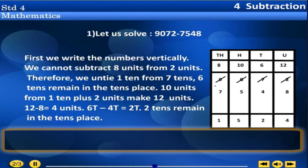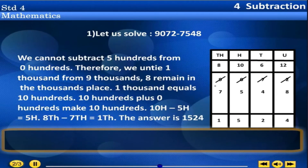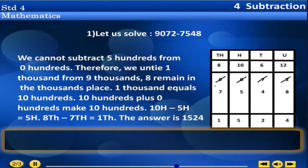6000 minus 4000 is equal to 2000. 2 tens remain in the tens place. We cannot subtract 5 hundreds from 0 hundreds. Therefore, we untie 1000 from 9 thousands — 8 remain in the thousands place. 1000 equals 10 hundreds. 10 hundreds minus 5 hundreds is equal to 5 hundreds. 8000 minus 7000 is equal to 1000. The answer is 1524.